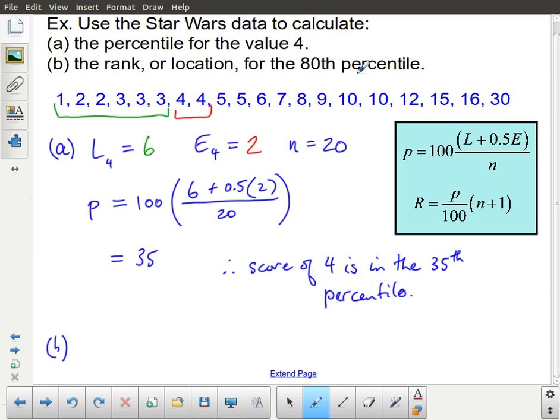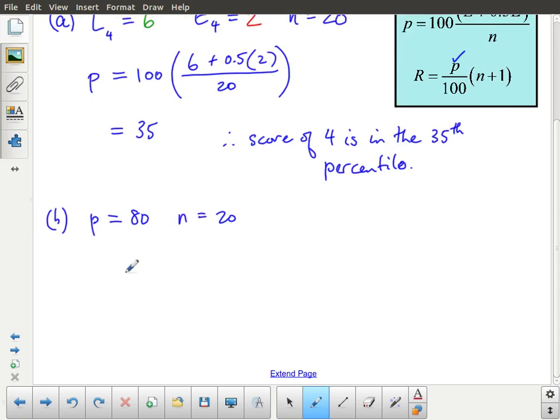So now the next part, what is the rank or the location for the 80th percentile? I already know that I want the p-value to be equal to 80, meaning I want the 80th percentile. So it's not 80%, it's the 80th percentile. Notice this doesn't have a percent symbol on it. That's the p-value from here. I know the number of pieces of data, that's still equal to 20. So now I'm going to figure out which rank that corresponds to. I take that p-value, that's 80, divided by 100, and then I do 20 plus 1. 80 divided by 100 is just equal to 0.8. Multiply that by 21, and I end up with the rank of 16.8.